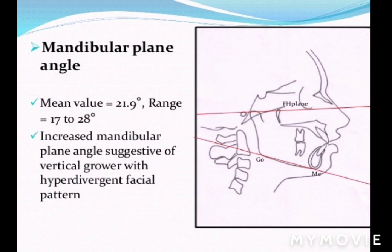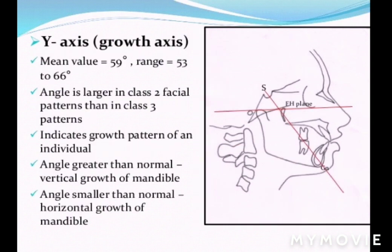Next is the mandibular plane angle. The mandibular plane joins the points gonion and menton, while the FH plane joins porion to orbital. The angle between them, at the point where they meet behind the skull, denotes the mandibular plane angle. The mean value is 21.9 degrees. An increased mandibular plane angle is suggestive of vertical growth, while a decreased angle indicates horizontal growth.